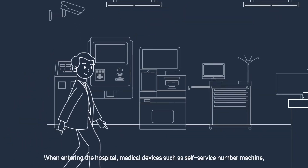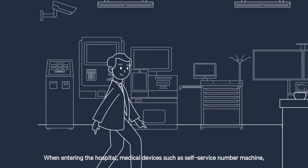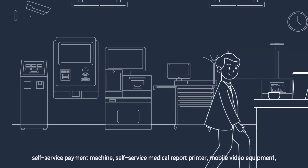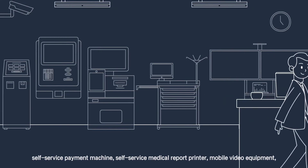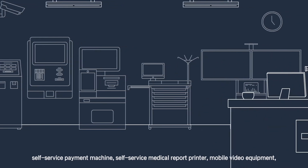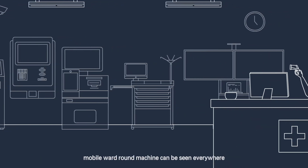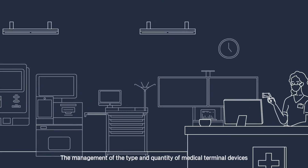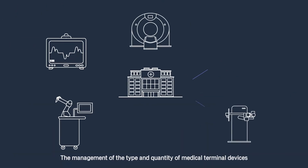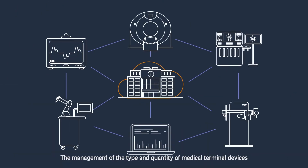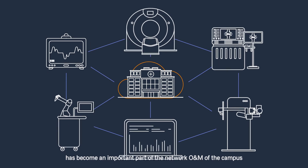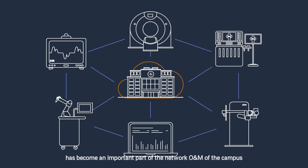When entering the hospital, medical devices such as self-service number machines, self-service payment machines, self-service medical report printers, mobile video equipment, and mobile ward round machines can be seen everywhere. The management of the type and quantity of medical terminal devices has become an important part of the network O&M of the campus.